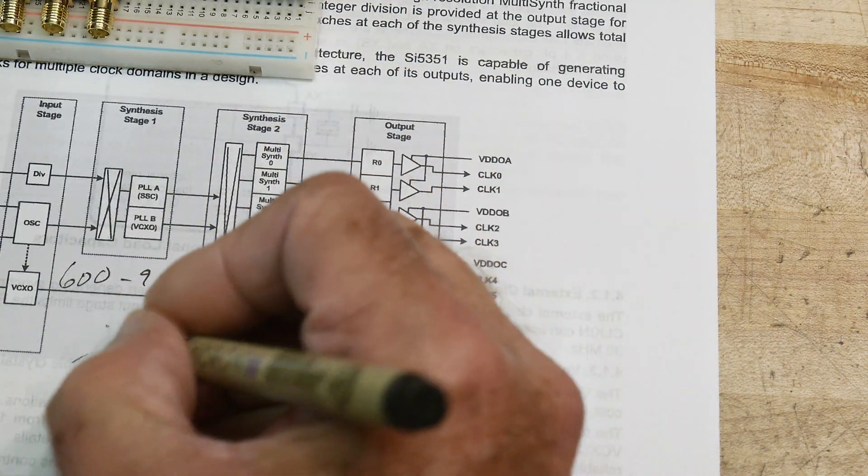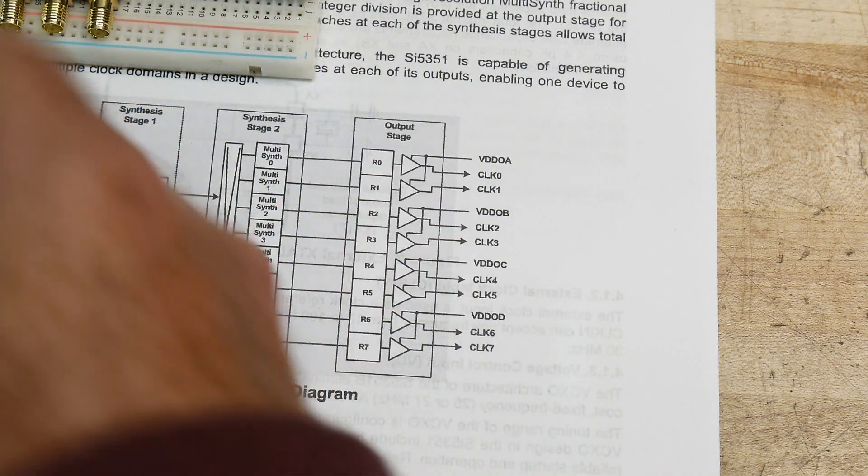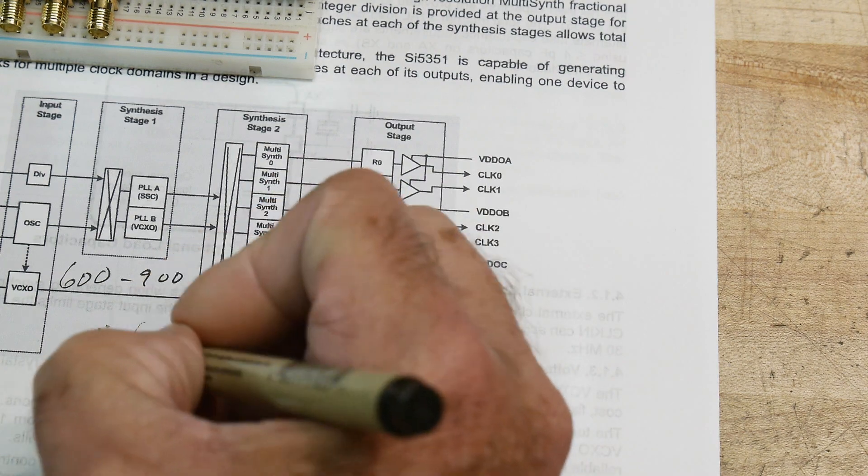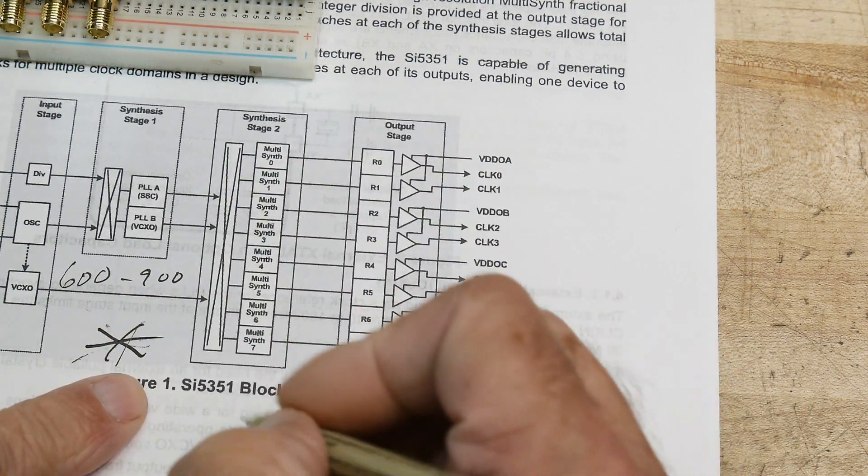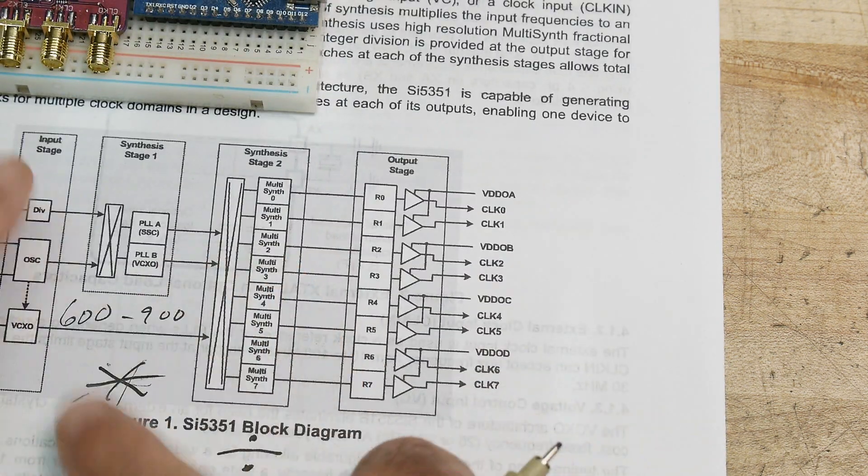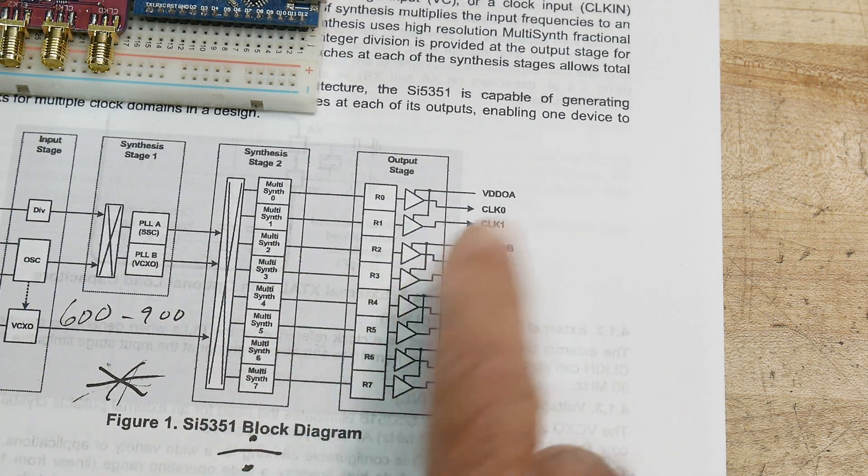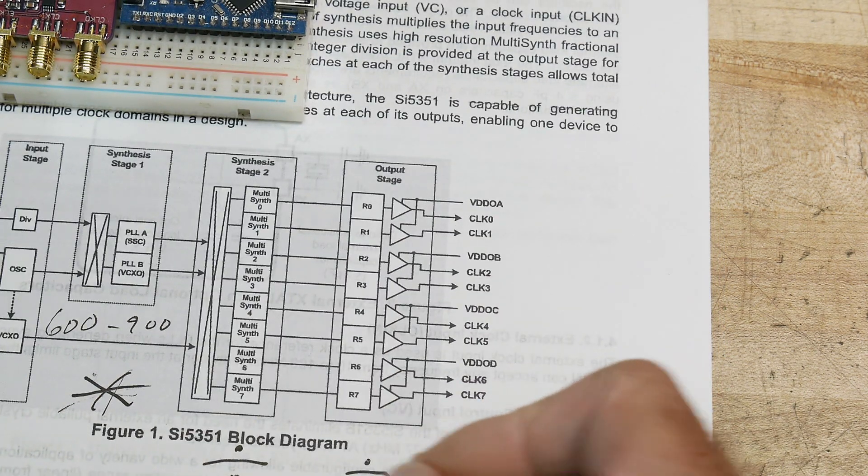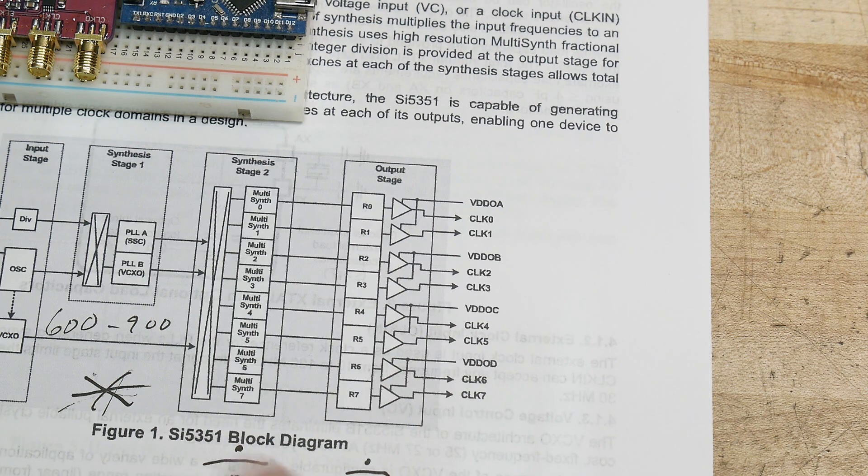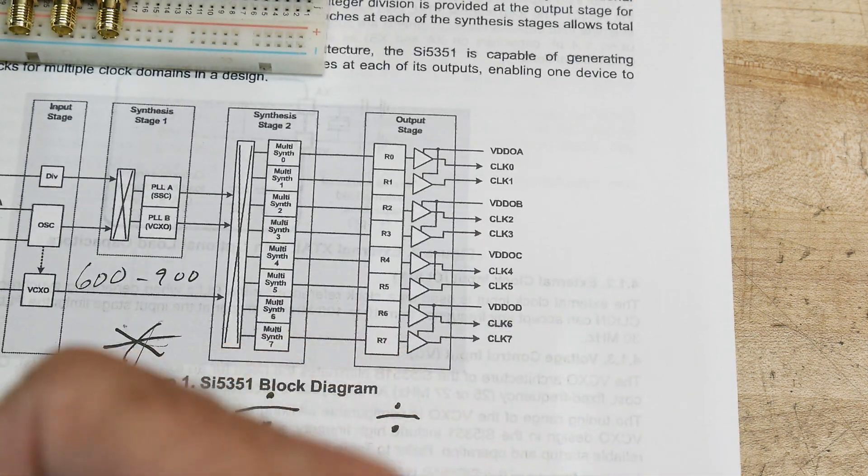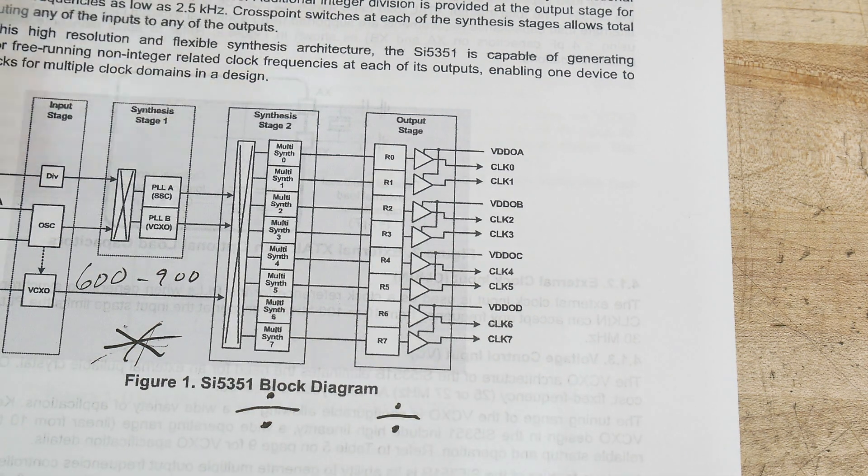So this is a... Oh man, this pen is not working good. We're going to do a multiplication here, and we're going to do a division in the next stage. So we can multiply it up, divide it back down, and then there's actually a second division stage. If you want to go even lower, you can divide it down again, okay? So multiply, divide, divide. And that's the way these chips work. But let's look exactly at what we're going to have to program.